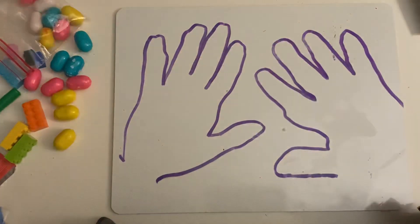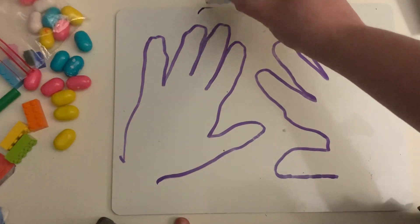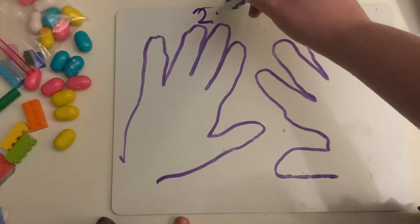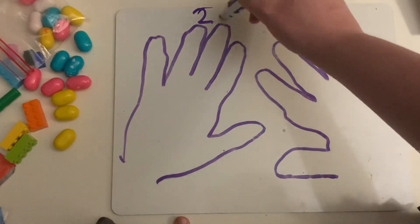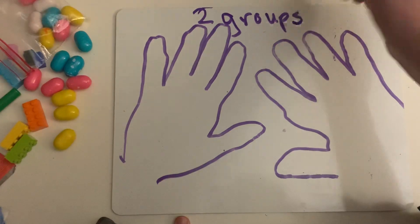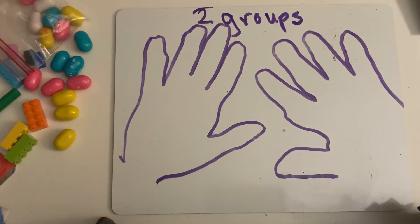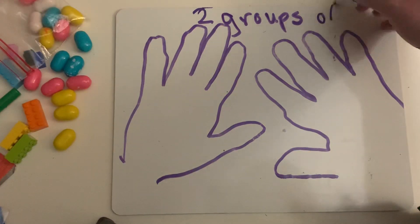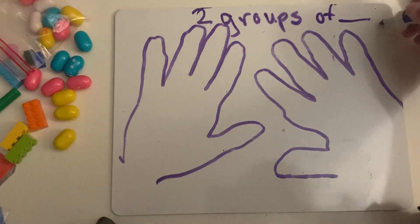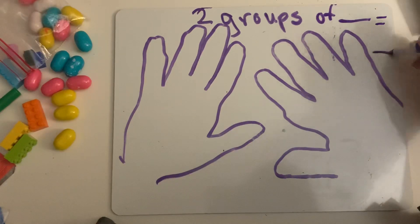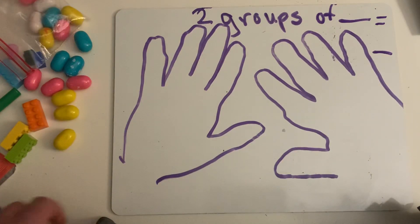So how many hands do I have? I have two hands, which is two groups, and you're going to get to draw anything that you want on your hands. These are your groups. So you're going to tell me two groups of how many equals your answer. So that's your activity for today. So have fun with it and we will talk to you later soon. Bye.